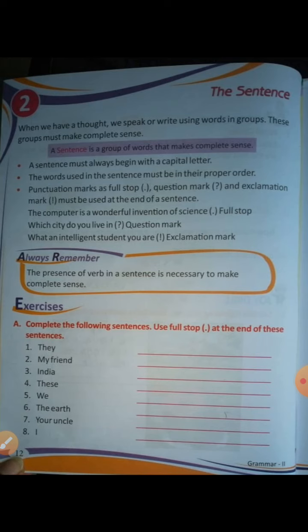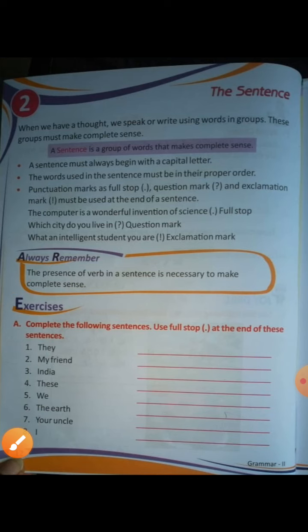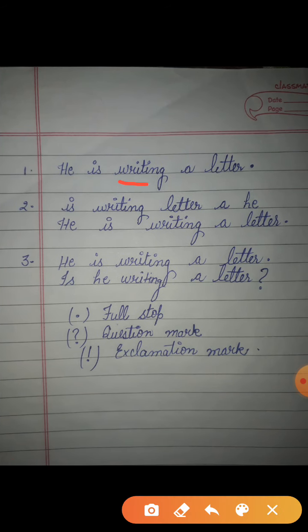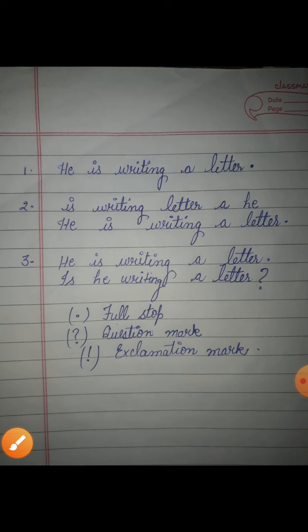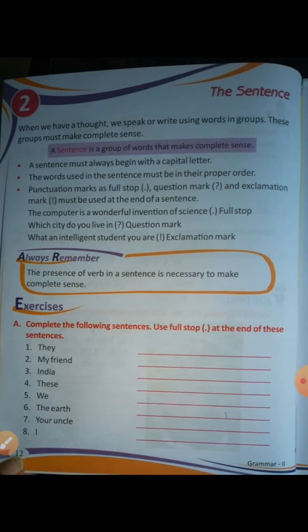Always remember: the presence of a verb in a sentence is necessary to make complete sense. Verb — in Hindi, we call it 'Kriya', meaning the action in a sentence. For example, 'He is writing' — he is writing a letter. The presence of the verb tells us the sense of the sentence. I hope you all get the explanation and the meaning of all the lines of this chapter.